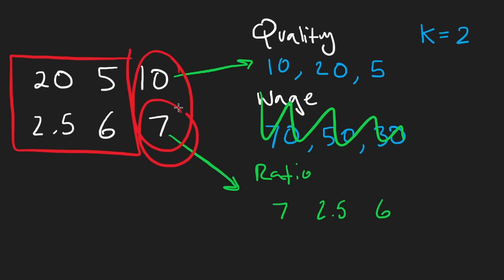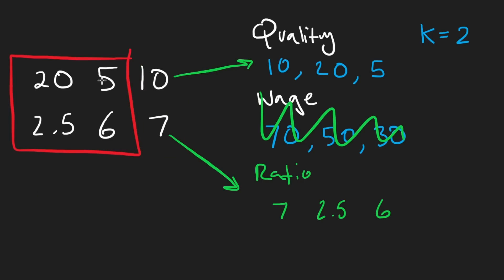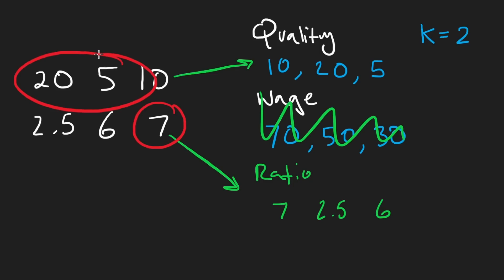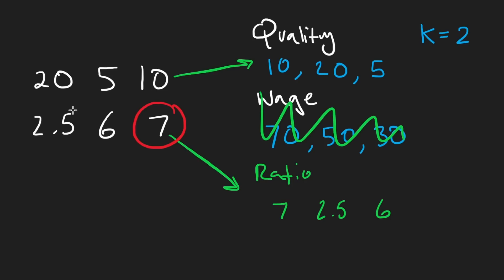Because if our rate now is seven, then we're going to pay the previous people seven as well. So it does matter which one we remove — we want to remove the person that would be paid the least. With seven, we should remove the one that had the highest quality.